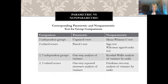If you have two independent groups, the parametric test is the unpaired t-test, and the non-parametric test is the Mann-Whitney U test. If you have two related scores like a pre-test/post-test, you use the paired t-test as the parametric test, and the non-parametric equivalent is the sign test or the Wilcoxon signed rank test.